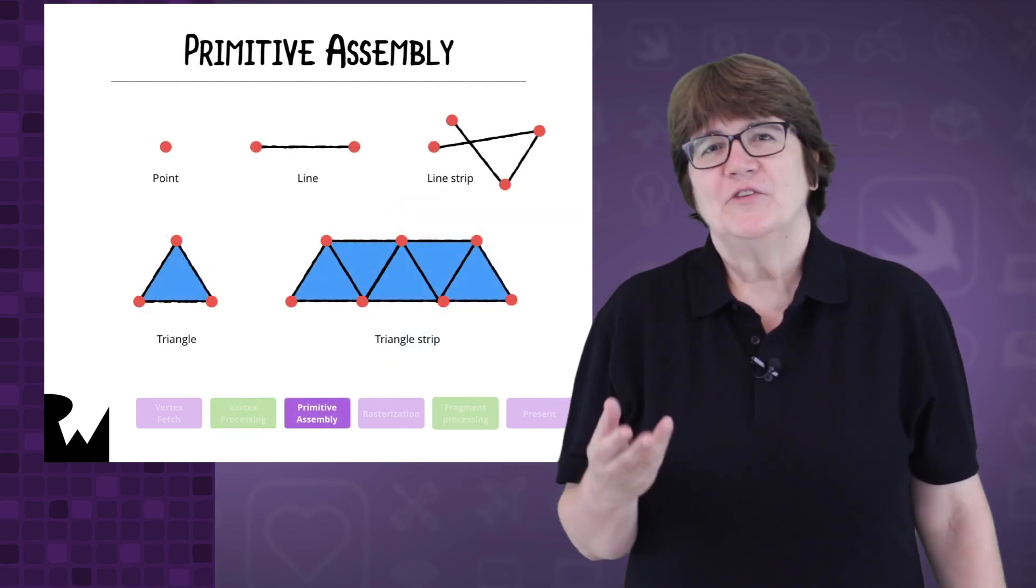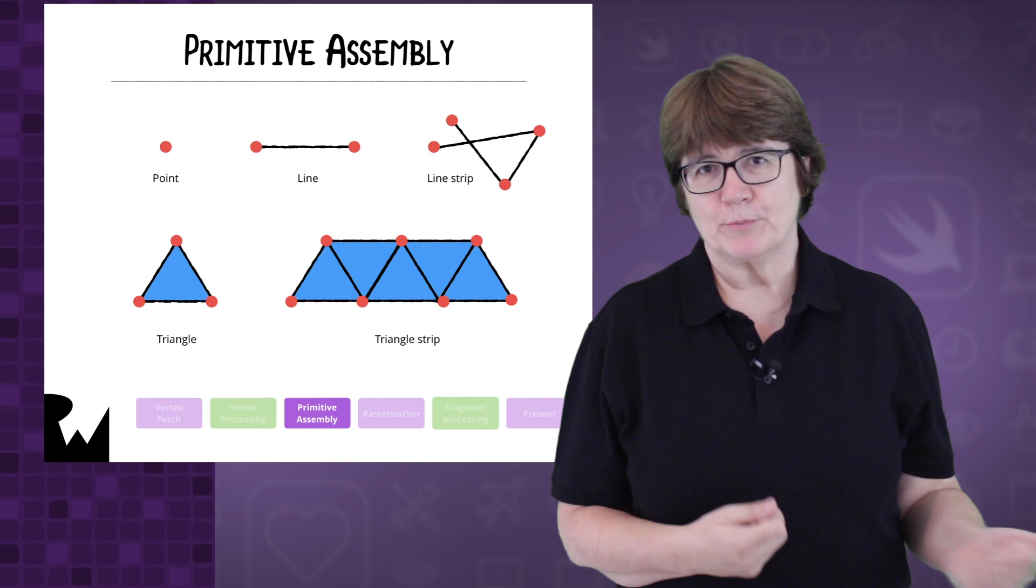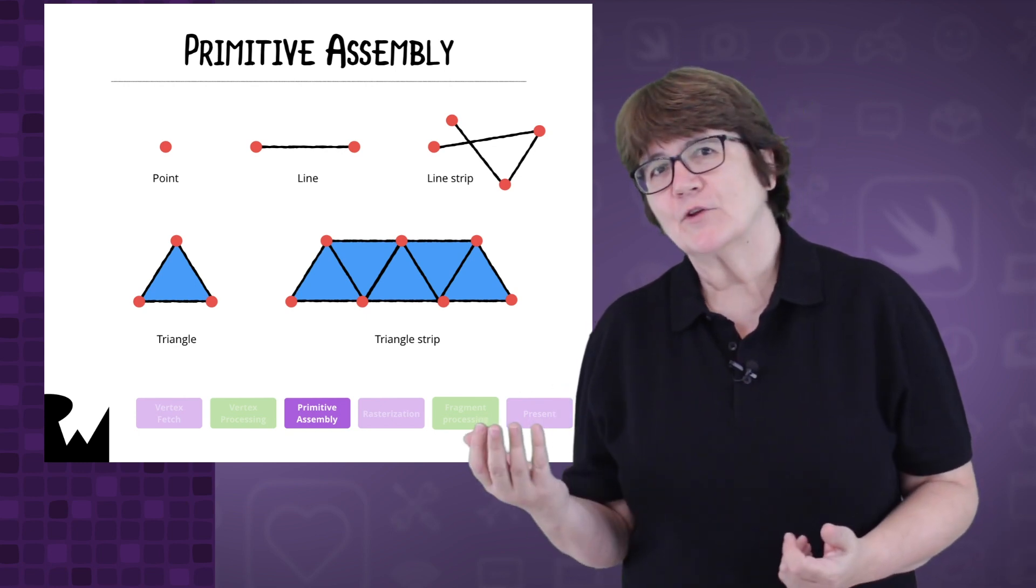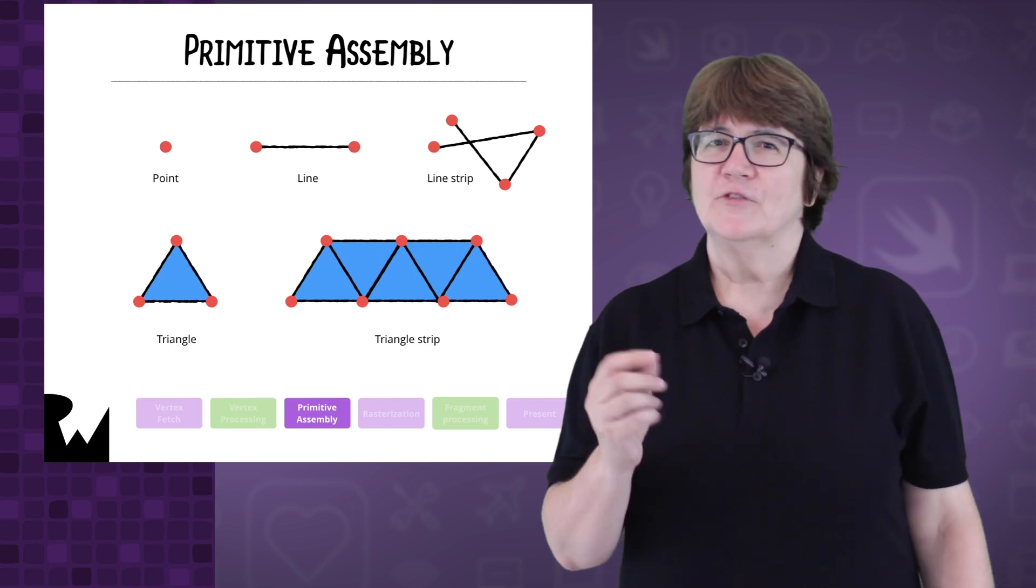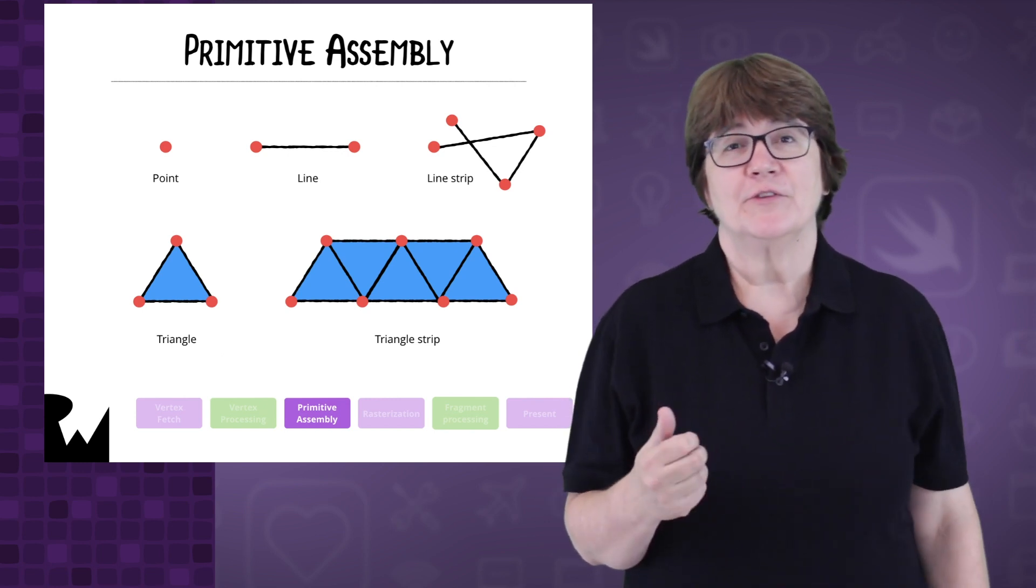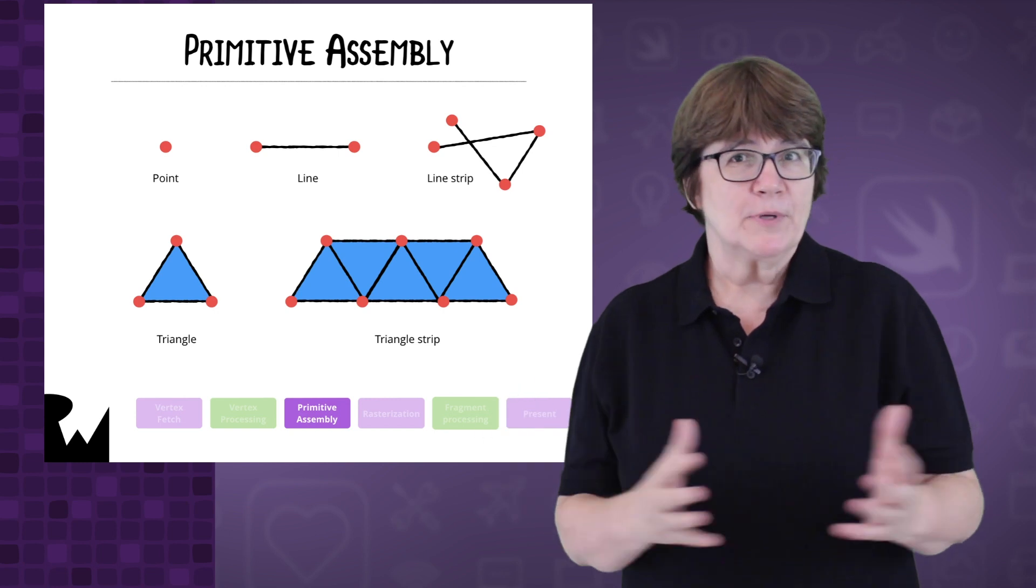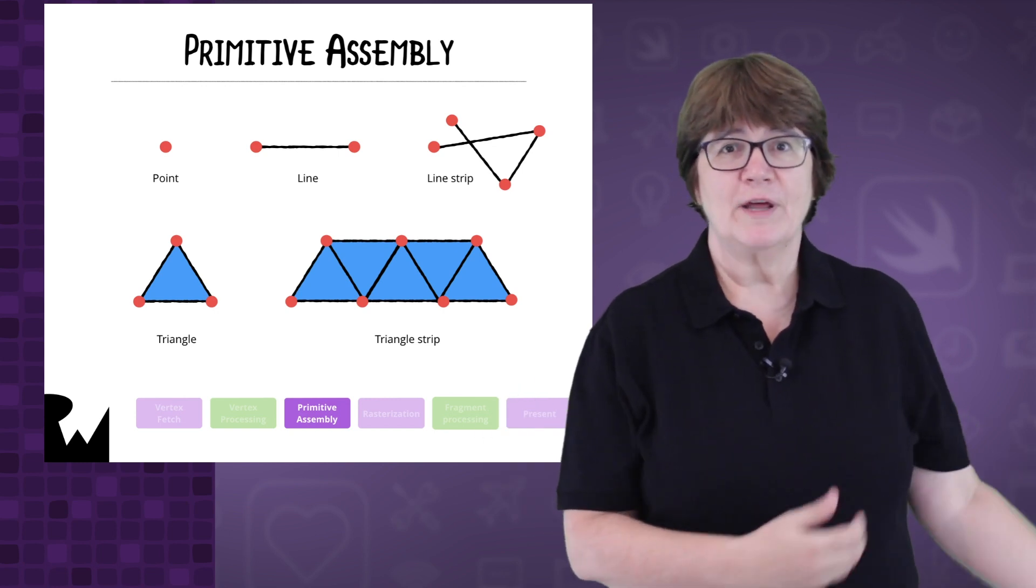On to primitive assembly. This stage assembles the groups into primitives. The primitive depends on the type you're drawing: points, lines or triangles. Some vertices may be clipped now if they don't fit inside the screen coordinates. The remaining primitives are then passed along to the rasterizer.